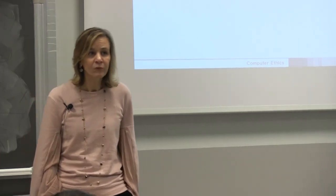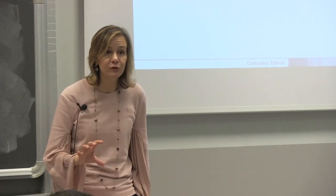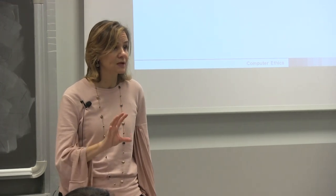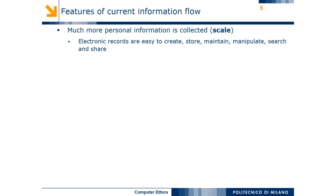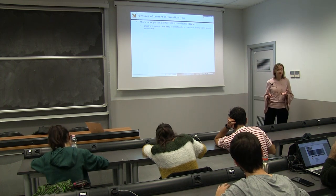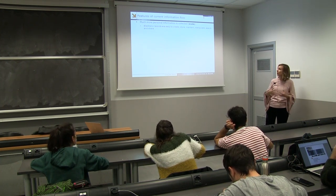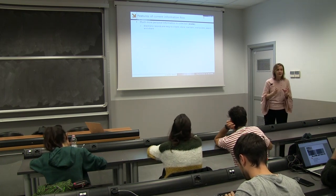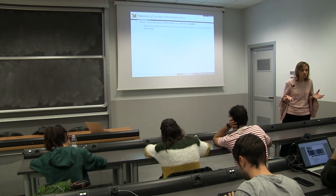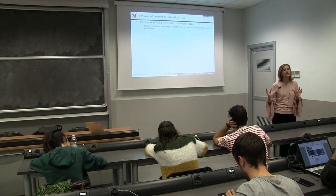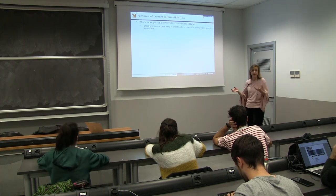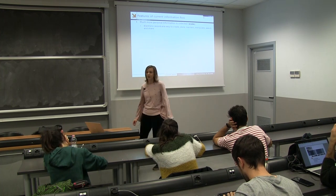Let me add something more specific about the type and diffusion of information relevant to privacy. First, there's a matter of scale: much more information is collected, and it's very easy to collect, maintain, share, manipulate, and use this information. This is not entirely new, but the degree of this scale is new and very peculiar to this particular socio-technical system.